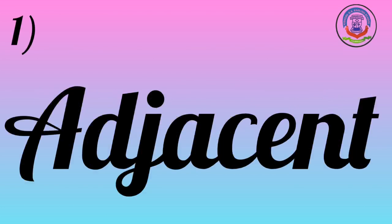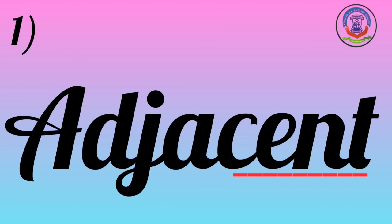Number 1: Adjacent. Spelling: A-D-J-A-C-E-N-T. Adjacent. Adjacent means near to or close to any place.